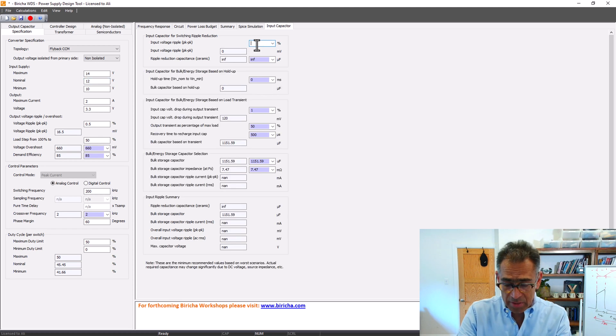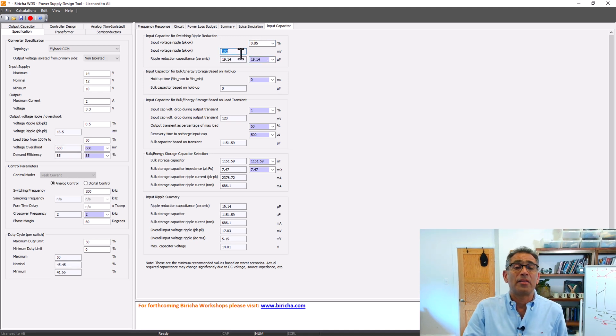Let us say that we want 100 millivolts, so if I reduce that to 0.85%, then I've got around 100 millivolts, which is what I want, and the calculated value of the ceramic capacitor is around 20 microfarad.